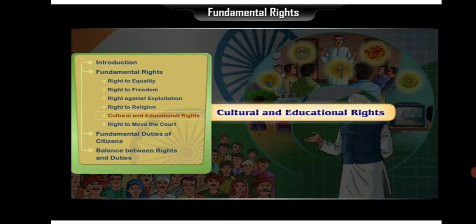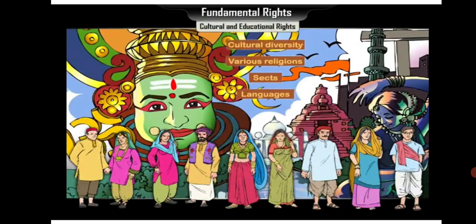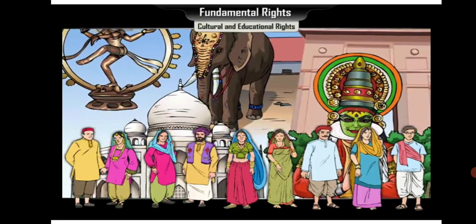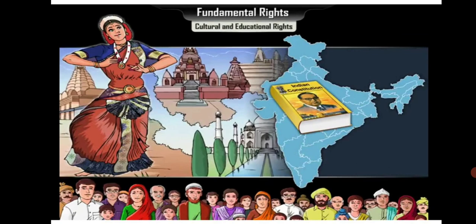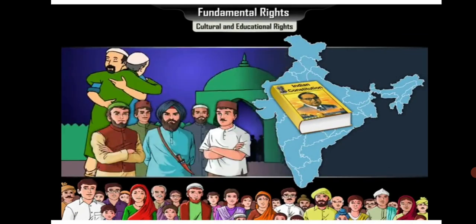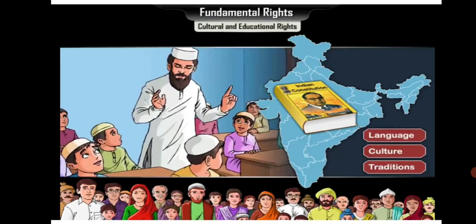Next, we shall learn about cultural and educational rights. We can see that there is great diversity of festivals, foods, and ways of life in our country. You may have noticed the differences in various wedding ceremonies. All these things are part of the cultures of different communities. Our constitution has given different communities the right to preserve their cultural uniqueness. People are not only free to preserve their own language, script, and literature, but also make efforts towards their promotion and can establish institutions for the development of their language.